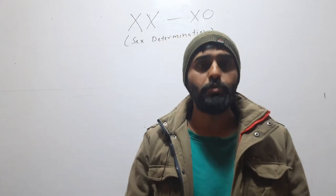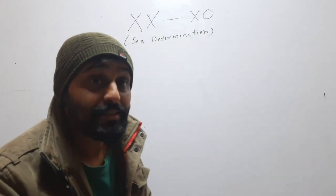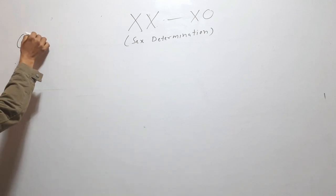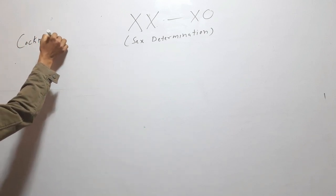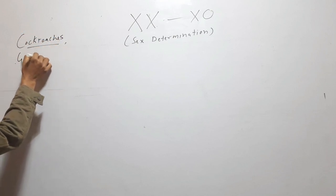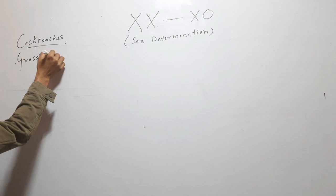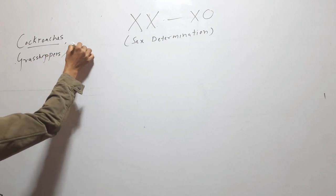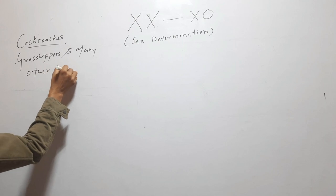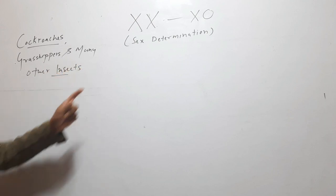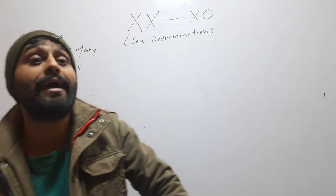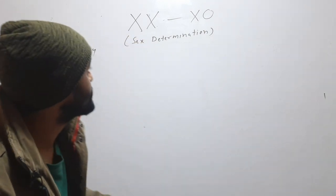Hello friends, welcome to my YouTube channel. Sex determination in case of cockroaches, grasshoppers and many other insects is XX and XO type. So what is this XX and XO type? Let's understand this.